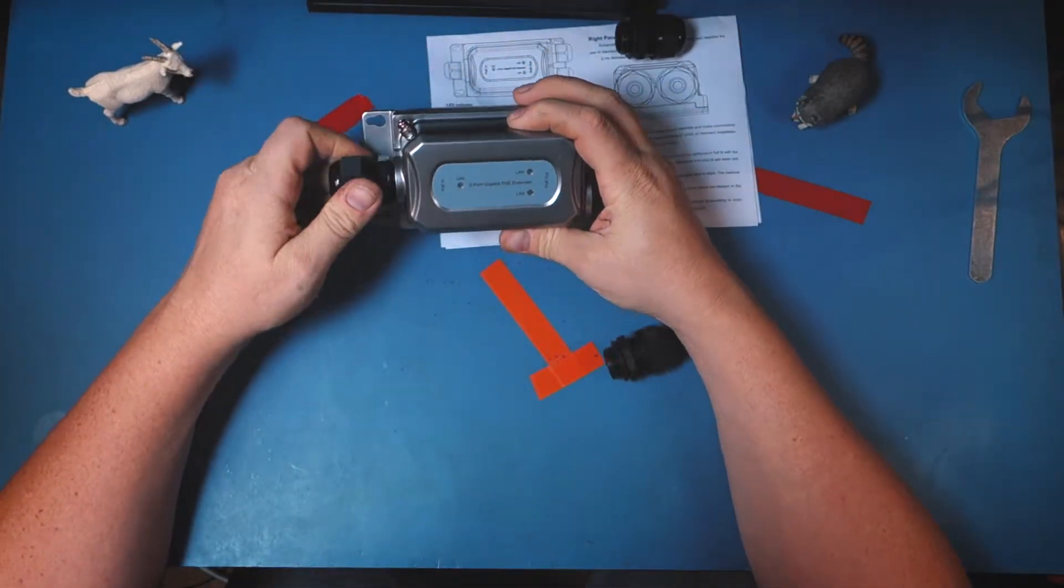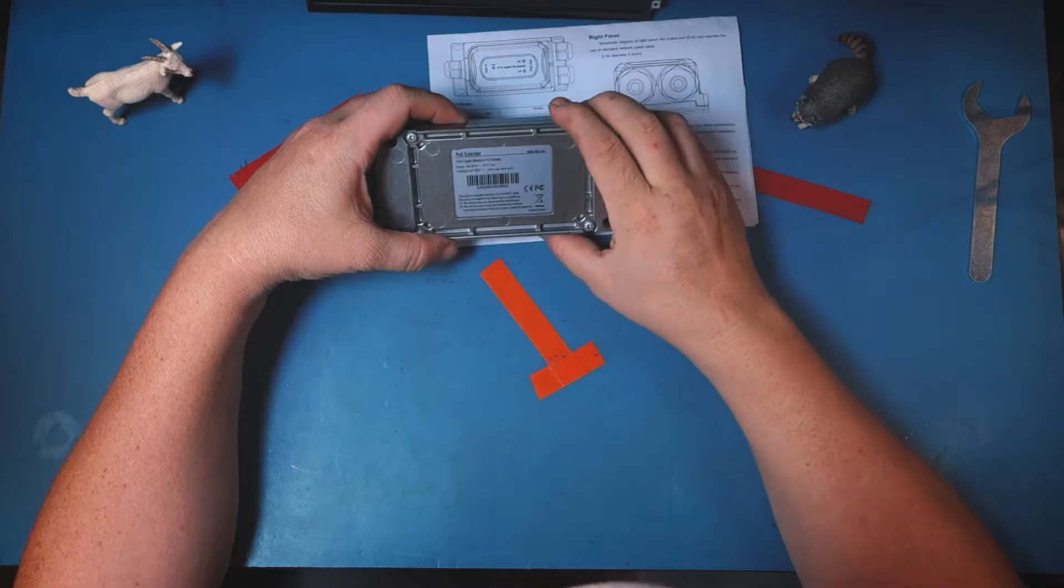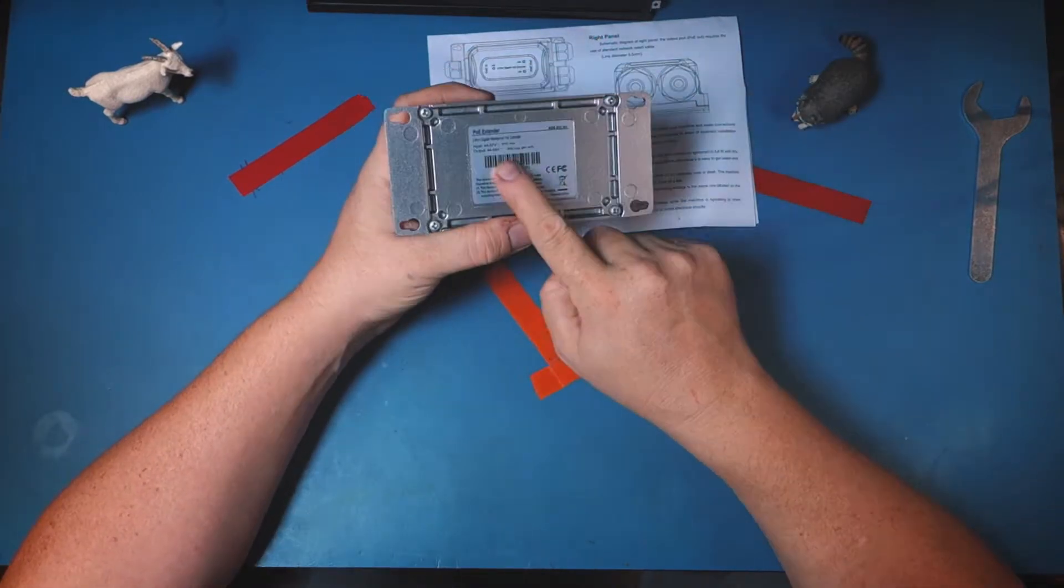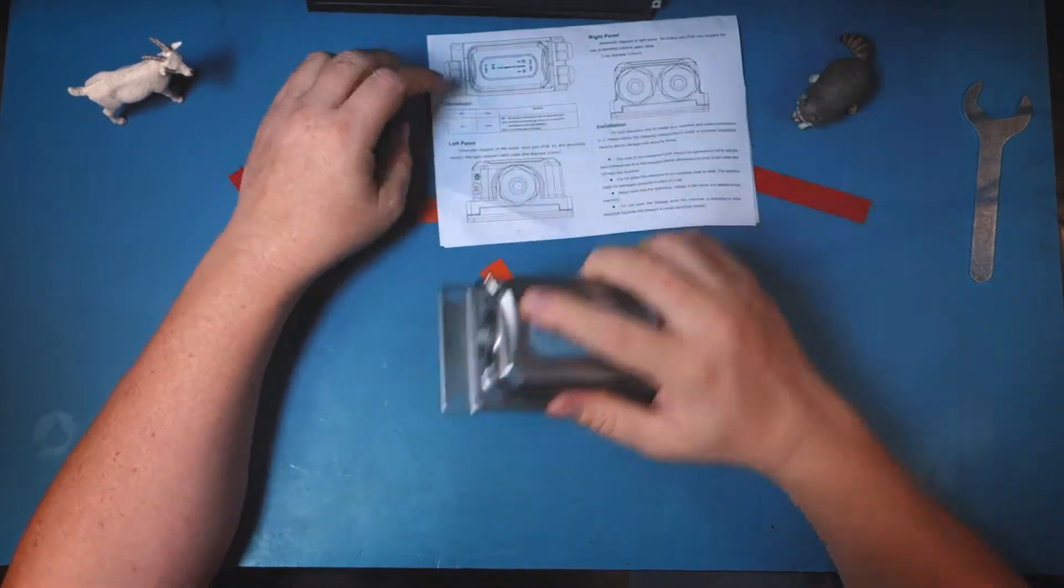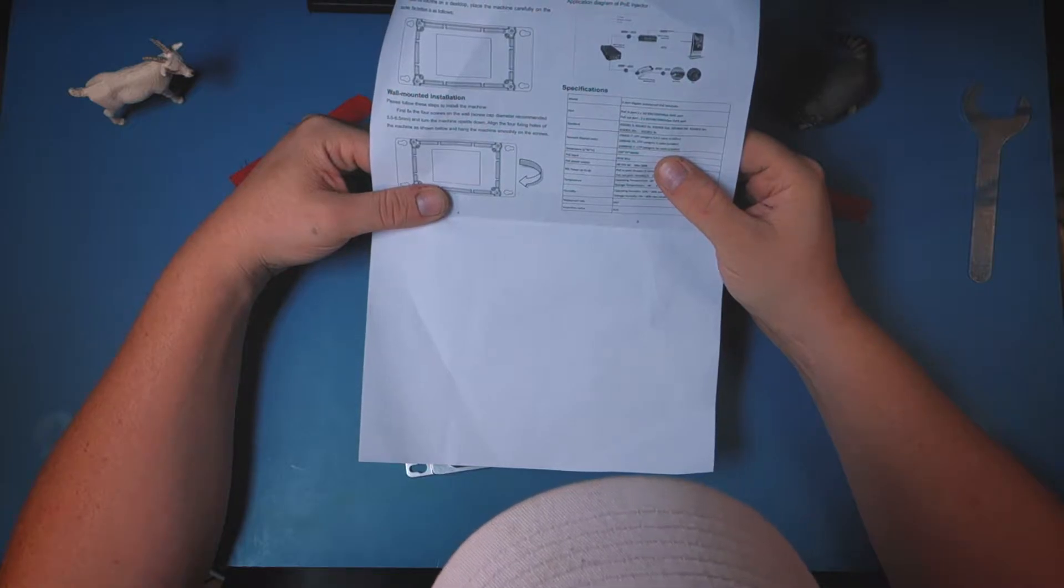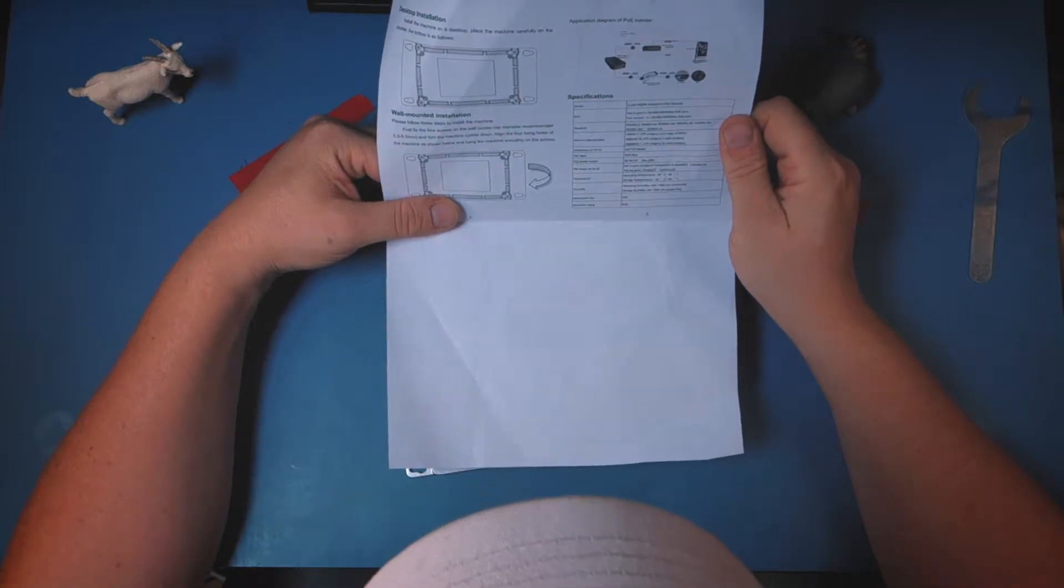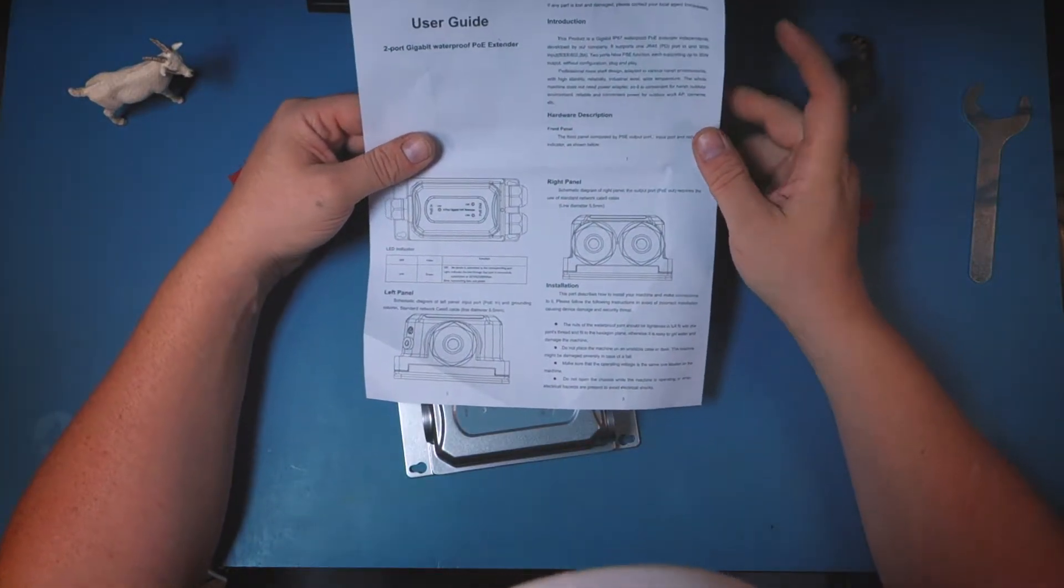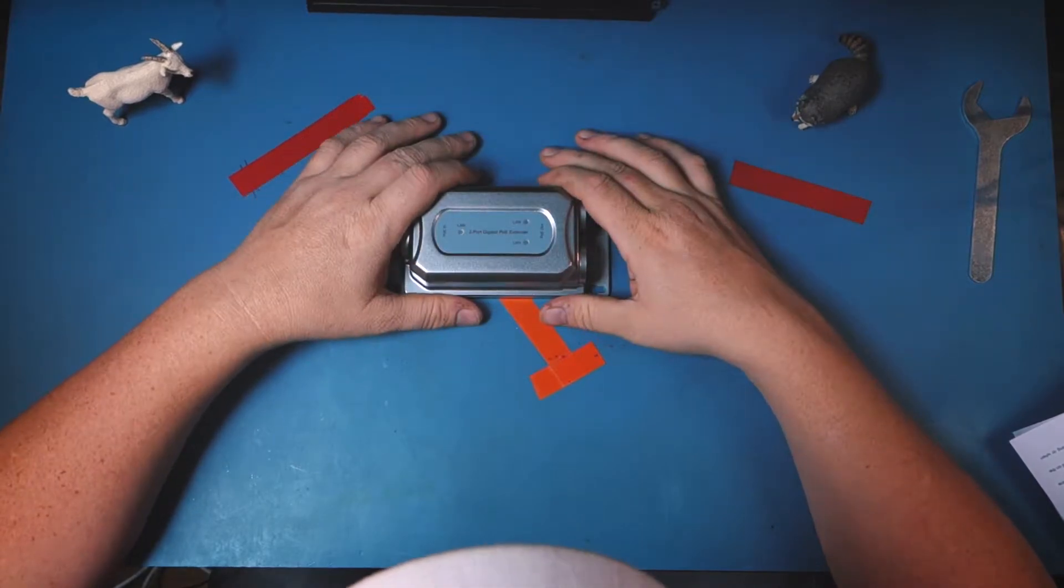You got your ground lug and you got your glands on here. You even have a wrench to tighten these guys up with. Somebody was thinking about that. This thing is basically a gigabit PoE extender and switch because you've got one in two out. It also says here that it supports BT so you can actually use 802.3bt as your power source for it or PoE plus plus to power this.